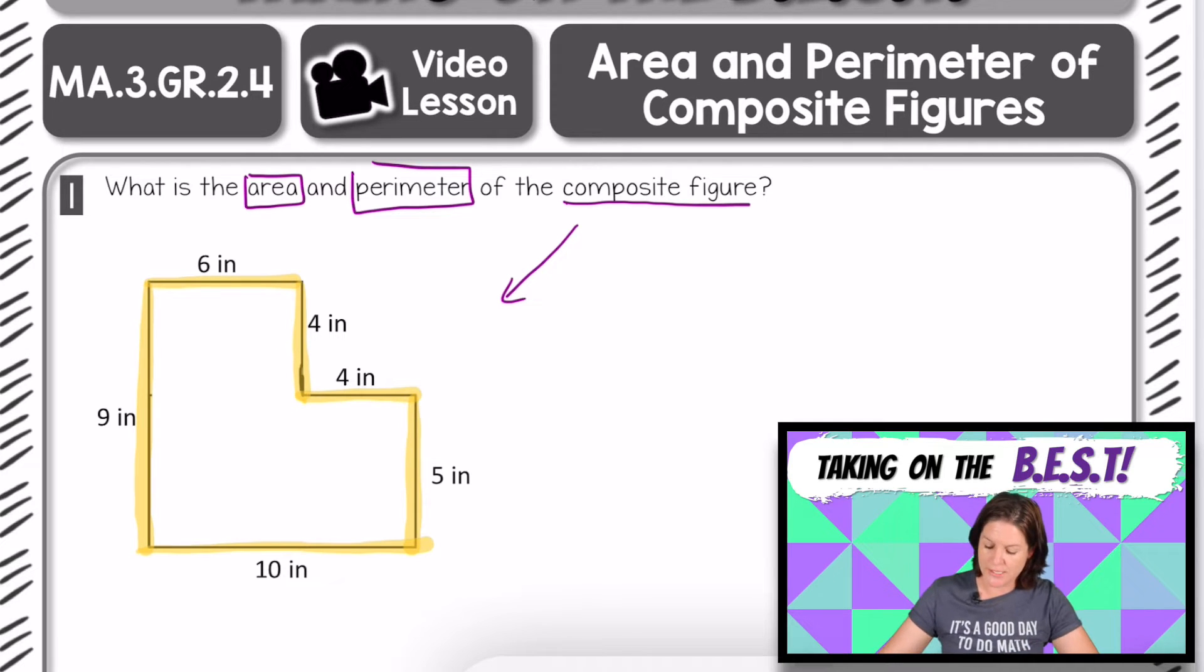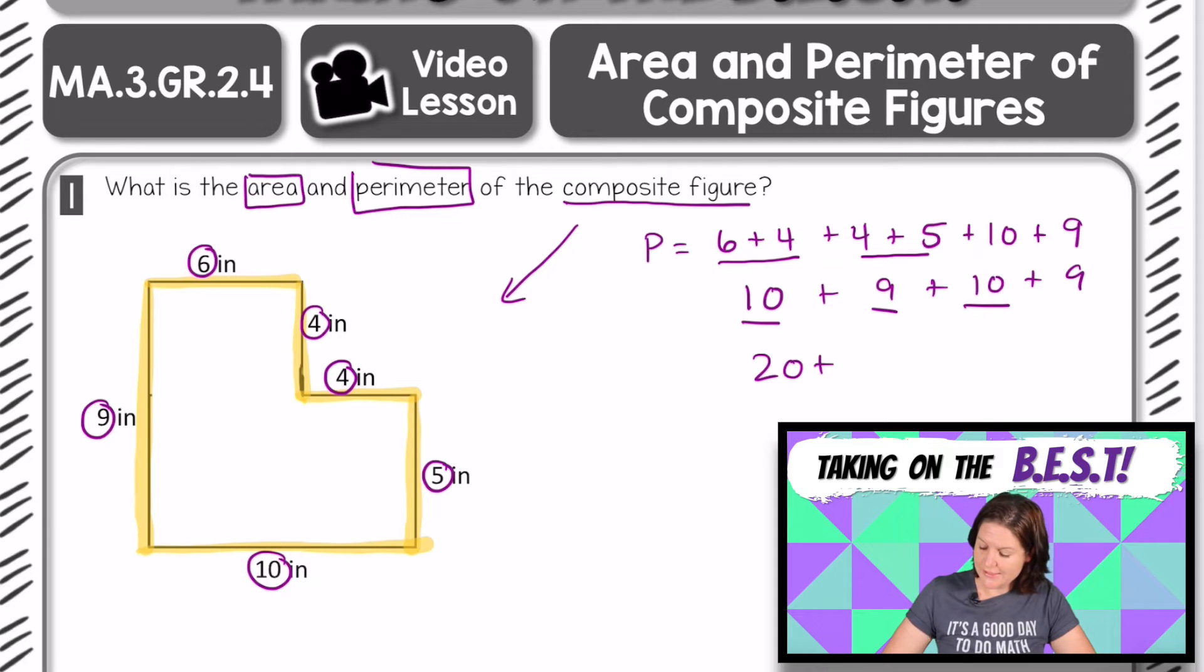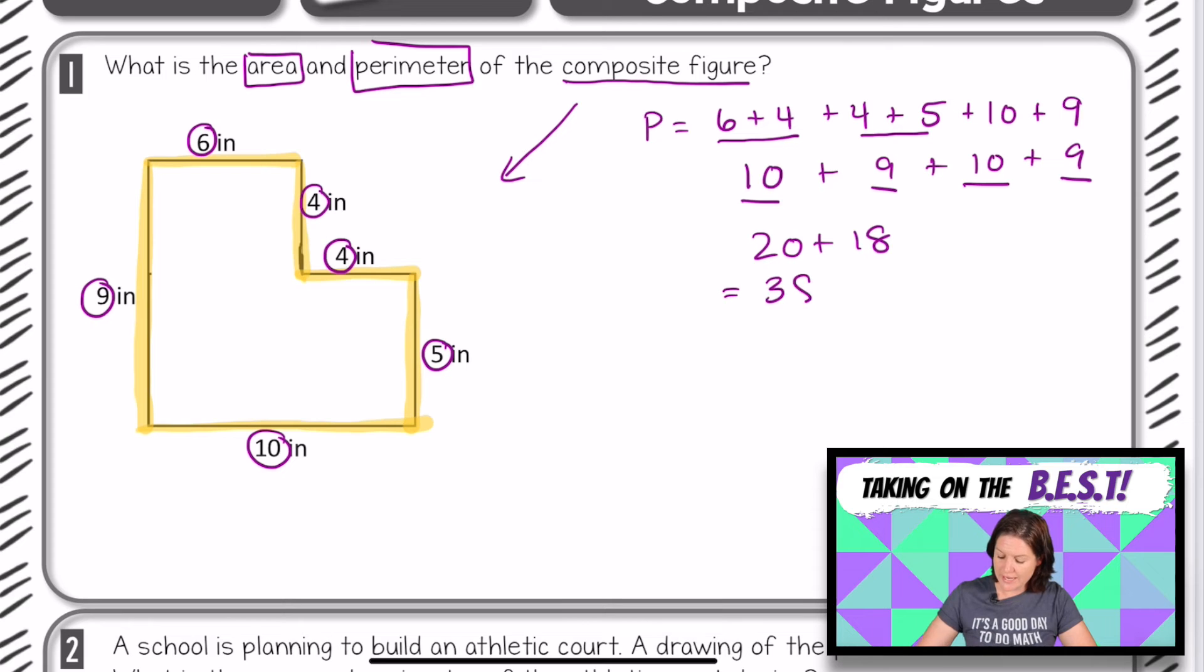We can do that without having to decompose anything. So we know that finding the perimeter, we need to add up all the sides, and there's a lot of sides to add up here. So let's start with 6 plus 4 inches plus 4 inches plus 5 inches plus 10 inches plus 9 inches. So now we have all the side lengths. We can figure out what the perimeter is now. So I'm seeing right here 6 and 4, that's an easy 10. I see 4 plus 4 is 9, so that's plus 9, plus 10, plus 9, and now I can do 10 and 10 is 20, and 9 is 18, and that would equal a total of 38.